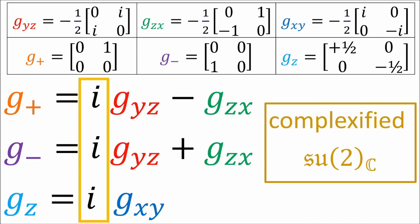Computing the commutator of G plus and G minus: we substitute their definitions, use linearity rules to get four terms, and the commutators of a term with itself go to zero. We end up with 2i times the commutator of G_YZ and G_ZX, which is G_XY, giving us 2G_Z. Similarly, the commutator of G_Z and G plus gives G plus, and the commutator of G_Z and G minus gives negative G minus. So we have a new basis of the complexified Lie algebra SU2 with these commutation relations.